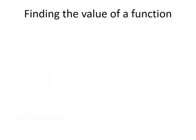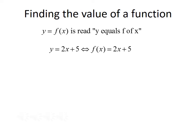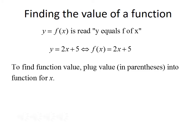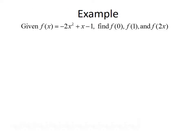Let's talk about finding the value of a function. Function notation — y equals f(x) — is read 'y equals f of x.' When we're talking about functions, y and f(x) are pretty much interchangeable. So y equals 2x plus 5 is the same thing as f(x) equals 2x plus 5. To find a function value, we'll plug the value inside the parentheses into our function for x and simplify. For example, given f(x) equals negative 2x squared plus x minus 1, we want to find f(0), f(1), and f(2x).